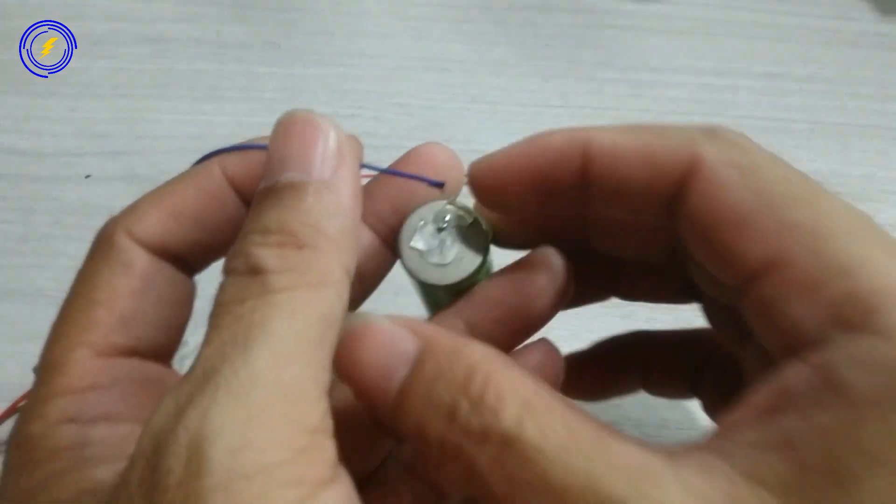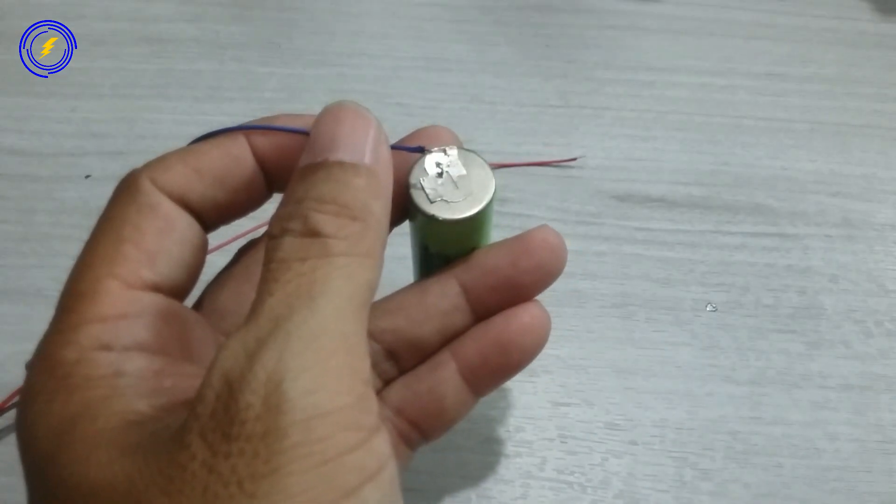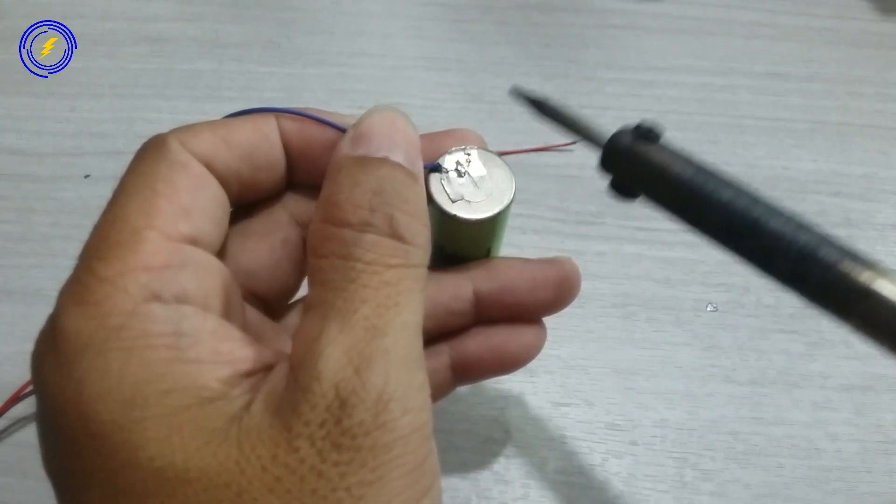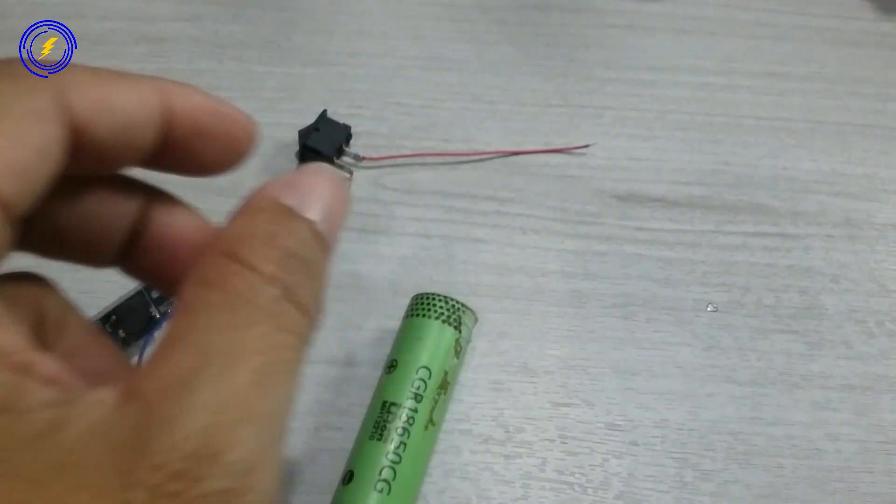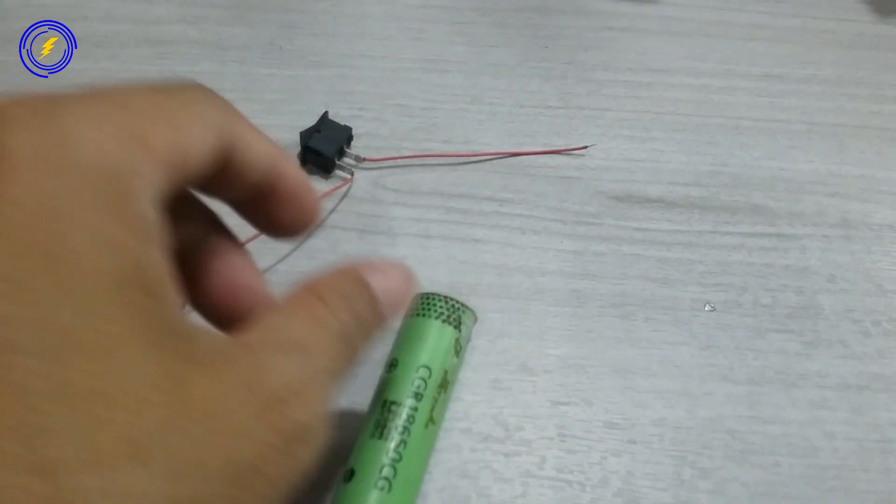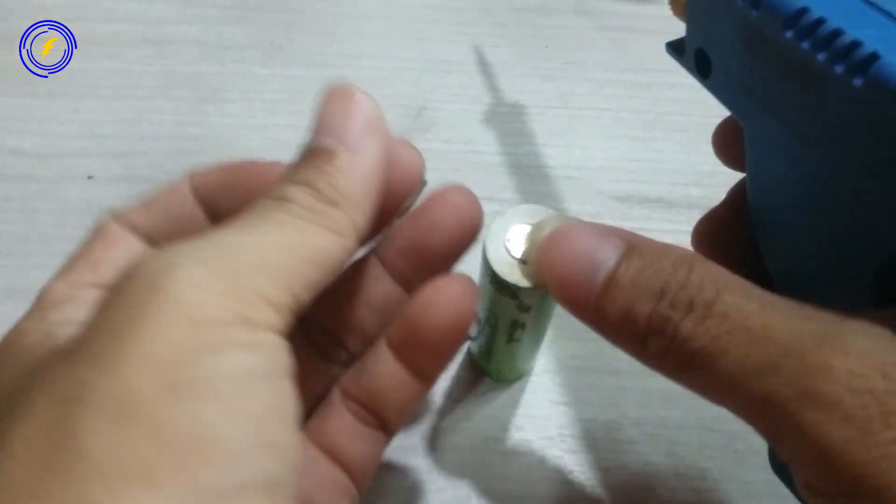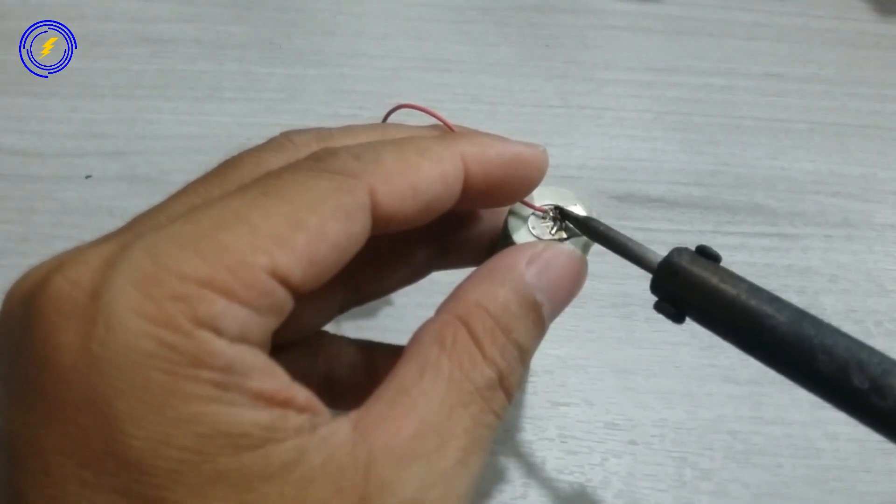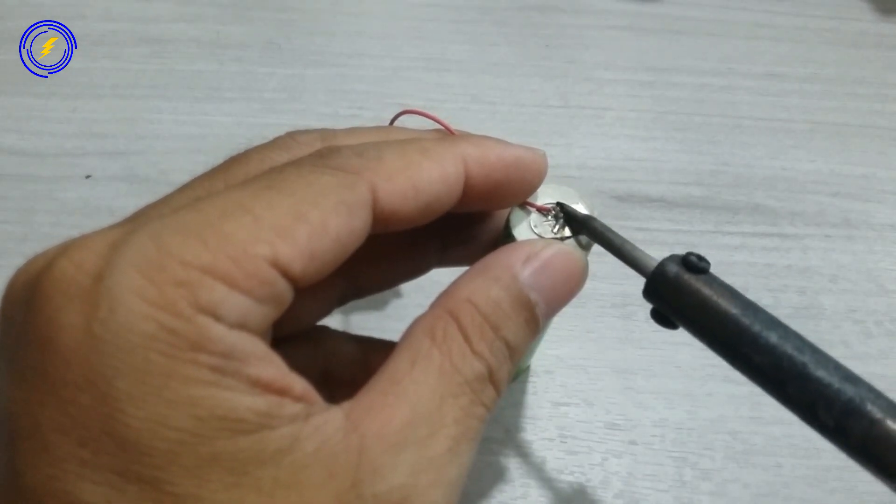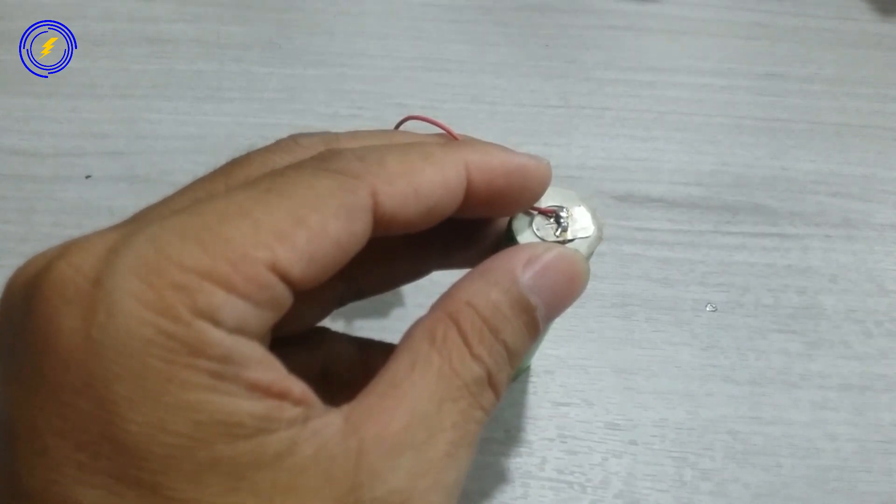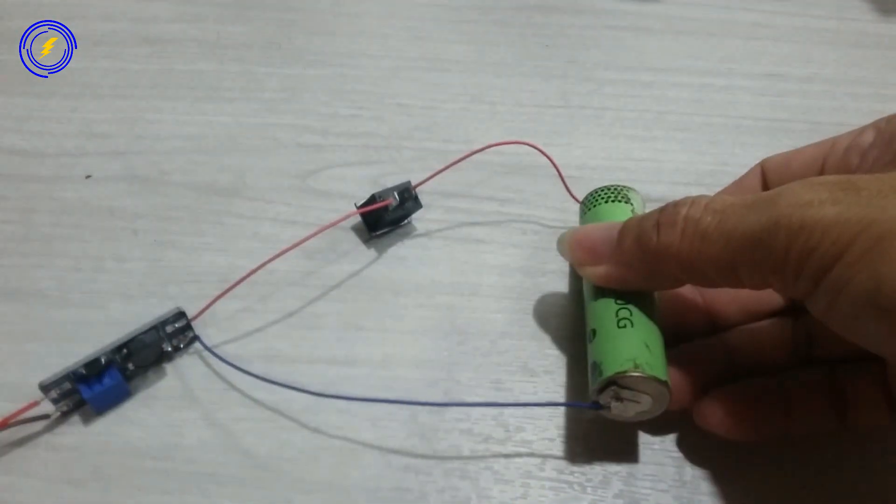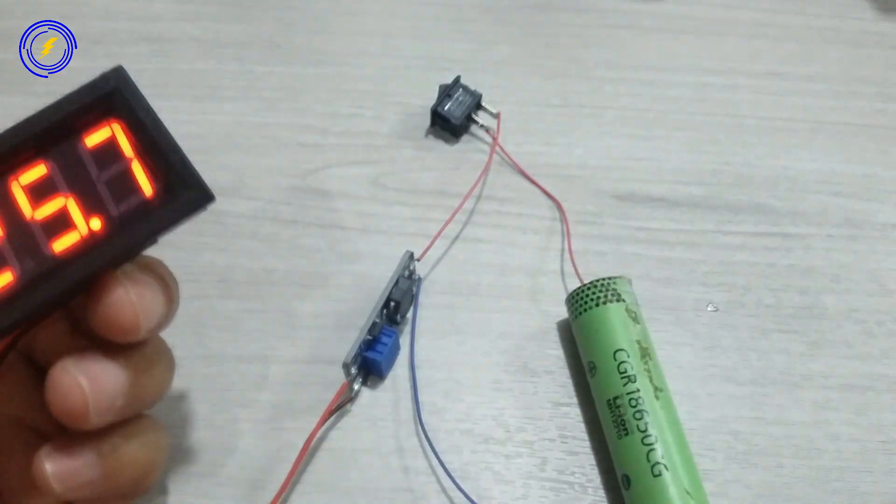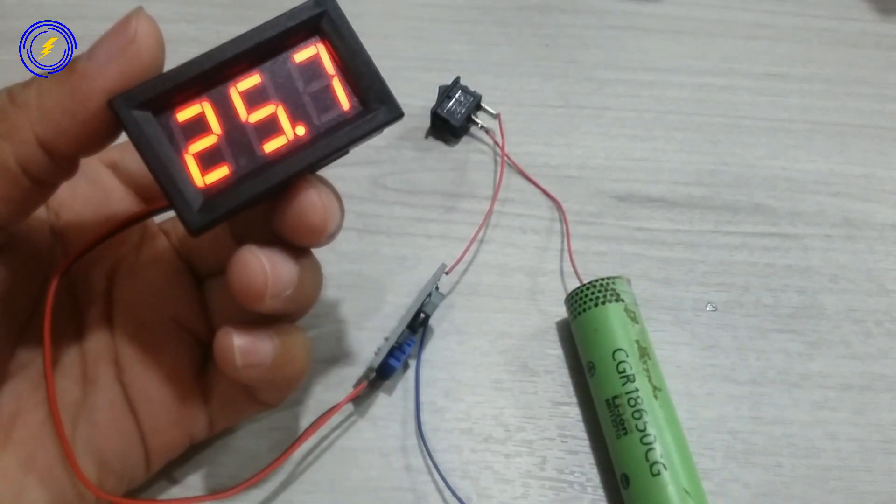Untuk kabel biru kita hubungkan di MIN battery. Dan untuk kabel merah dari saklar kita hubungkan ke Plus baterai. Ini sudah ada tegangan 25,7V. Nanti akan kita putar mentok.